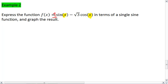Sine has an implied coefficient of 1. This means a equals 1, b equals negative root 3. So square root of a squared plus b squared equals the square root of 4 equals 2.